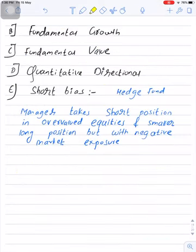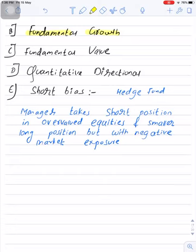The next subcategory is fundamental growth. Here, the fund manager uses fundamental analysis to identify growth companies and takes long positions in them. Next is fundamental value — the fund manager again uses fundamental analysis, but specifically to identify undervalued securities. Next is quantitative directional, where the fund manager uses technical analysis to identify undervalued and overvalued securities.